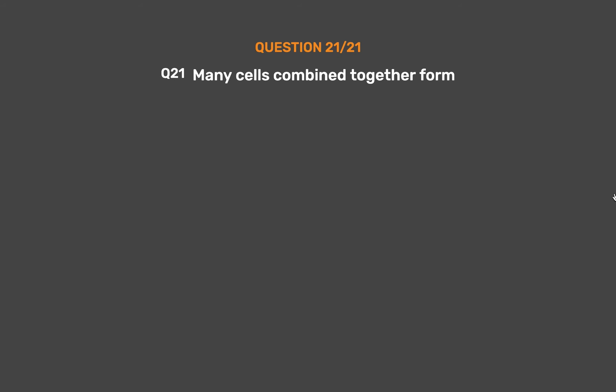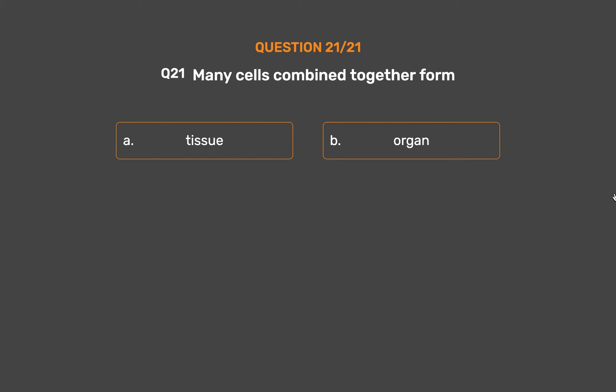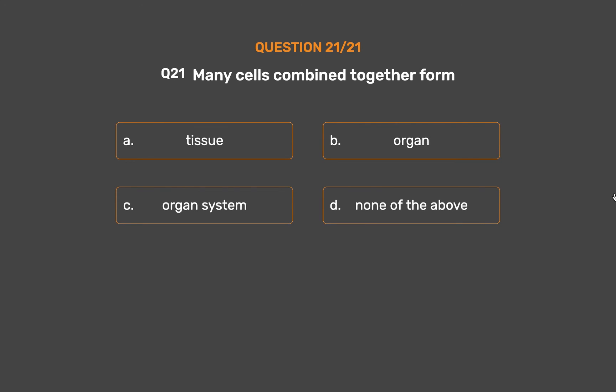Question No. 21: Many cells combined together form. Option A: Tissue. Option B: Organ. Option C: Organ system. Option D: None of the above.